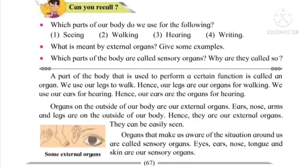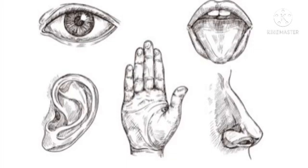Which parts of the body are called sensory organs? Why are they called so? You already studied this in the third standard. Eyes, ears, nose, tongue, and skin are our sensory organs. We are aware of our surroundings by these organs, so they are called sensory organs.